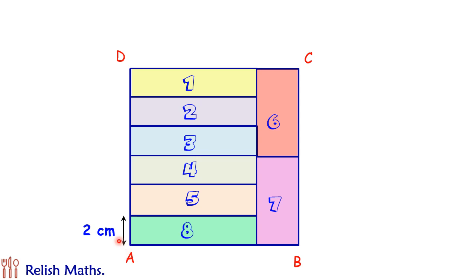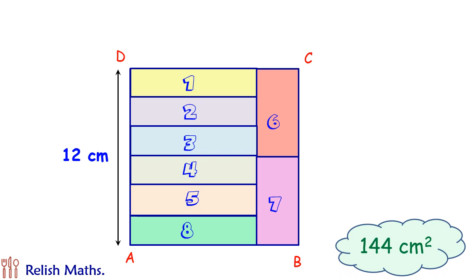Thus the length of AD will be nothing but 6 times 2 cm. With length of the side given as 12 cm, we can get the area of square as 144 cm square. I hope you enjoyed the solution. Keep watching.